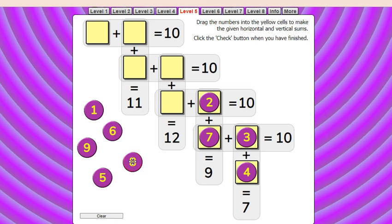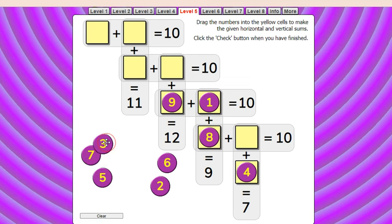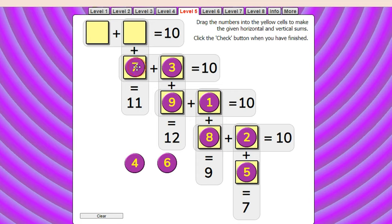Let me place nine here. Nine plus one equals ten. One plus eight equals nine. Then eight plus two equals ten. Two plus five equals seven. Nine plus three, yes, oh, we are coming to the final result.